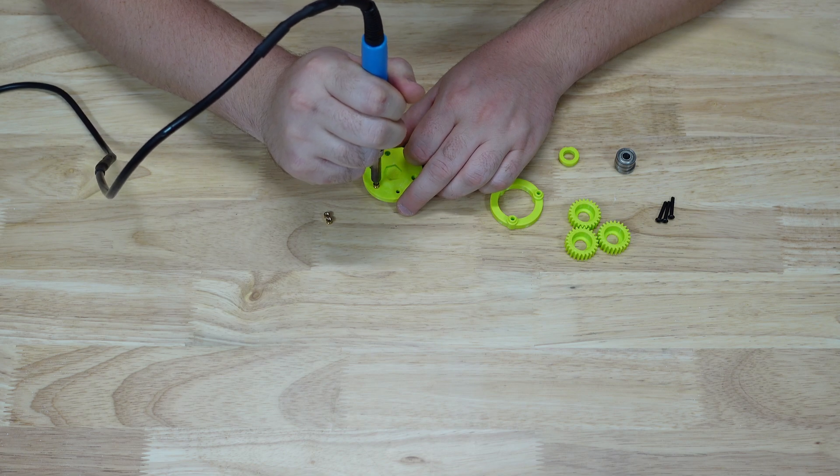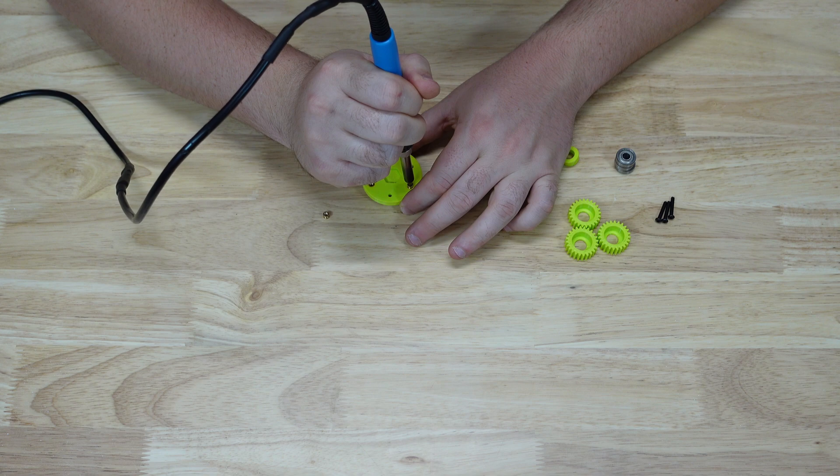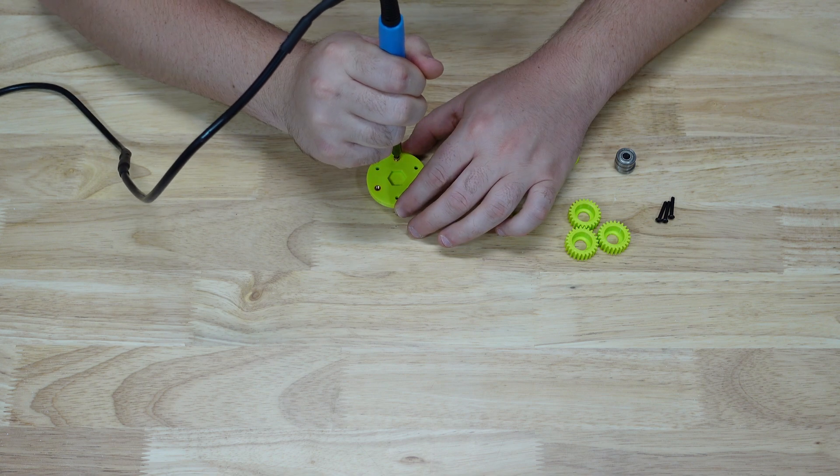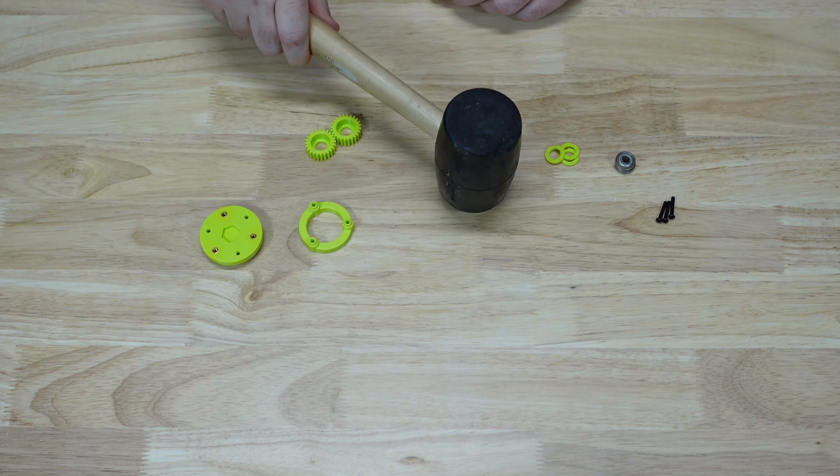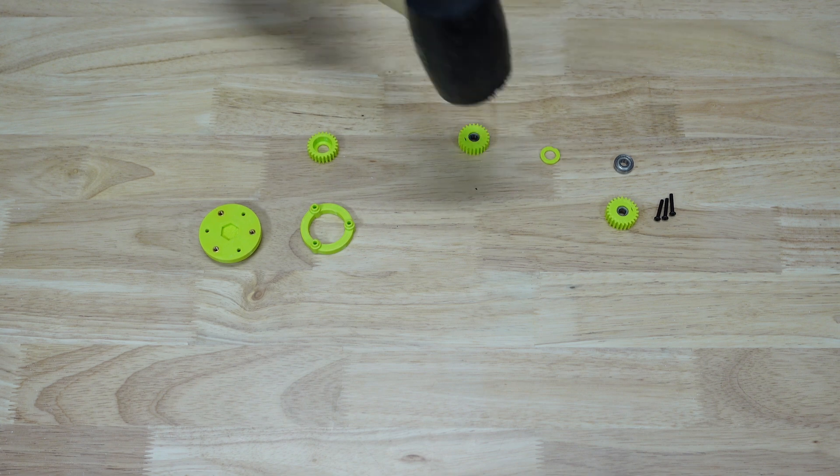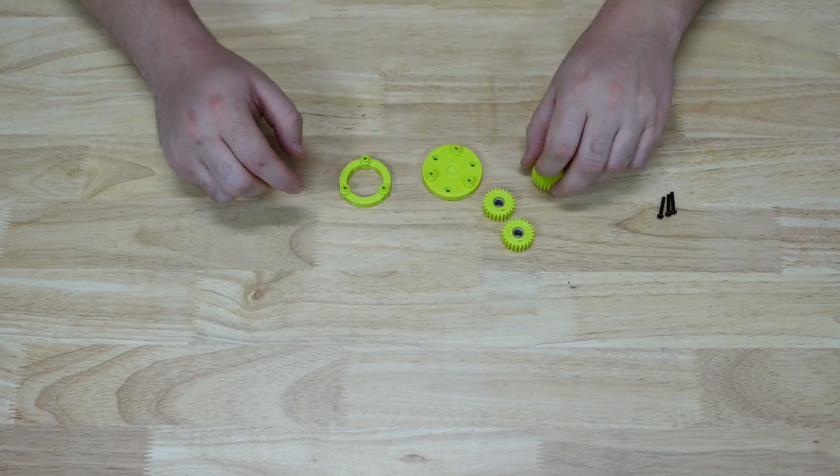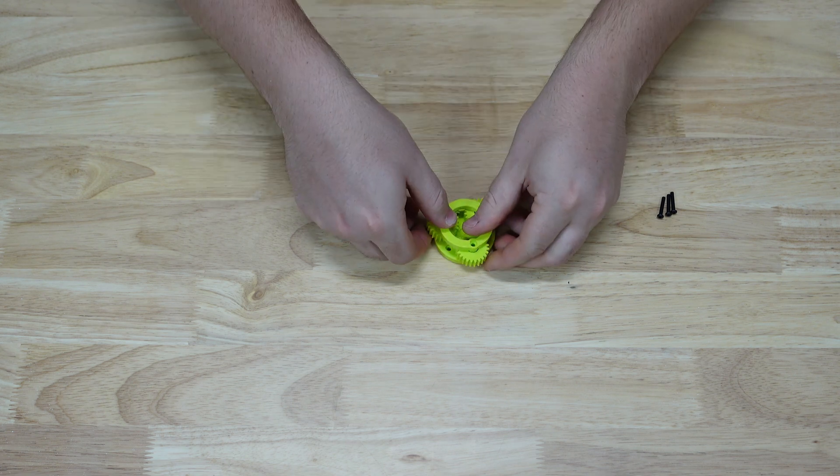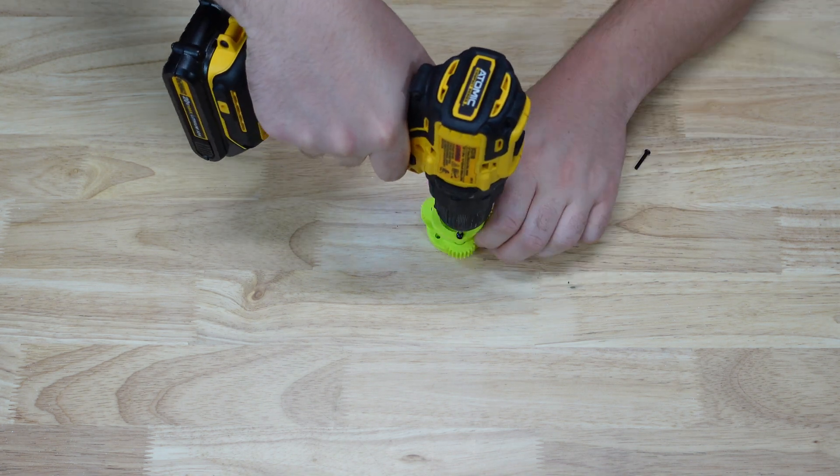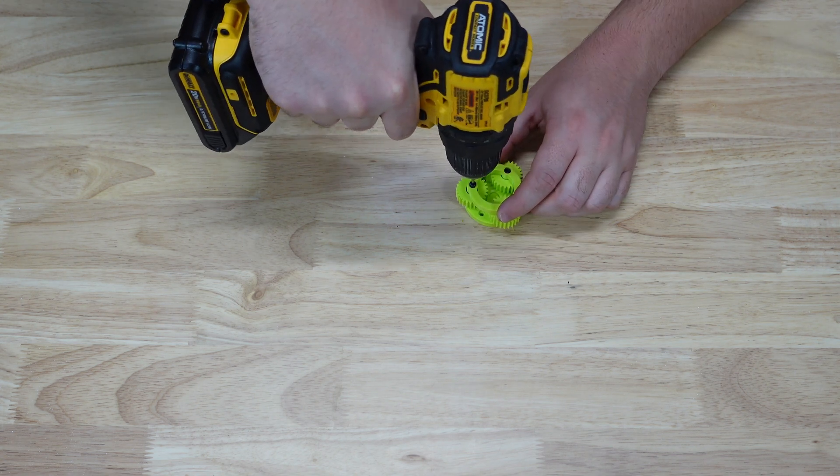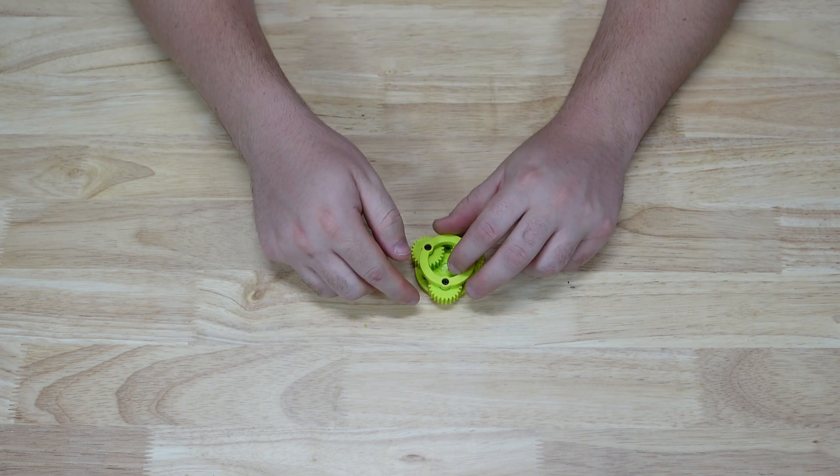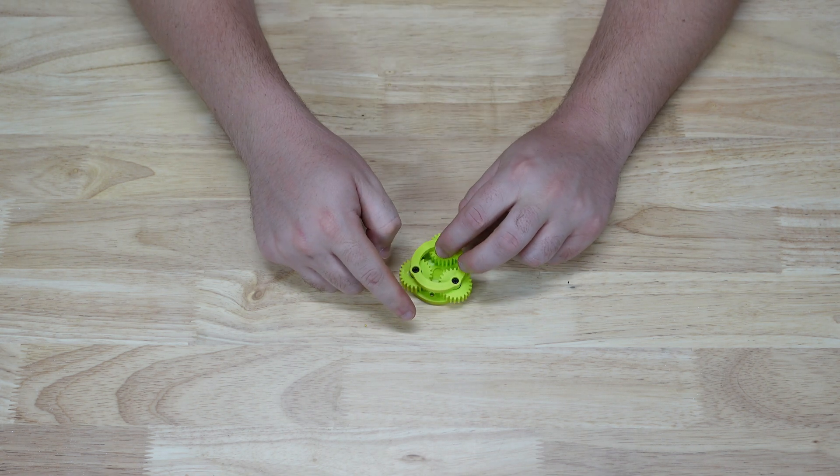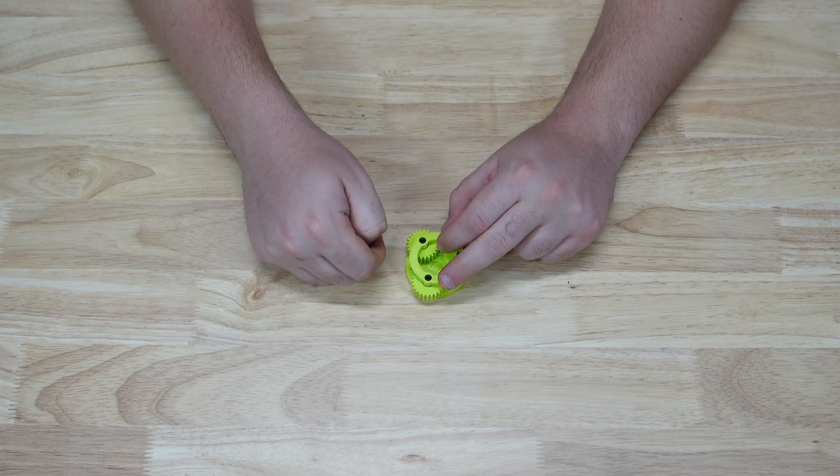To start the build, I'll add heat set inserts to one side of the carrier for an easy way to fasten the planet gears in place to the carrier shafts. After that, I'll gently tap the bearings and bearing retainers in place with a rubber mallet. Once I'm done with that, I'll add the planet gears to the carrier, pop the other side of the carrier in place, and screw the two pieces together with some M3 screws. At this point, it's important to note that the final carrier will need additional heat set inserts on the backside to use for attaching the output hub.